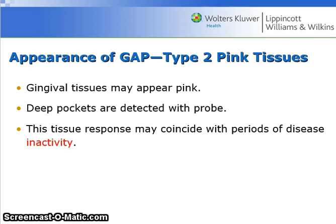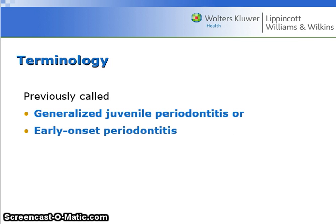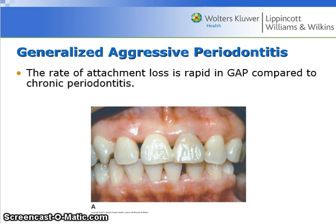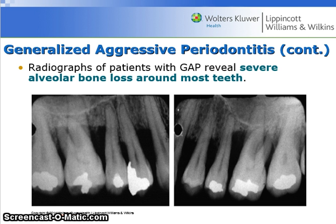Type 2 presents with pink tissues — gingival tissues may appear pink, deep pockets are detected with a probe, and this tissue response may coincide with the periods of disease inactivity. This was previously called generalized juvenile periodontitis or early onset periodontitis. The rate of attachment loss is rapid in GAP compared to chronic periodontitis. Radiographs of patients with GAP reveal severe alveolar bone loss around most teeth.